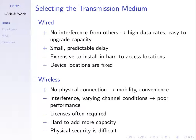Wired links are expensive to install in hard-to-access locations. For example, if SIT wants to upgrade capacity between our two campuses, we'd need to dig holes over the 16 or so kilometres between them — very expensive. And inside your home, if it's already built, running new cables along floors or inside walls can be difficult and costly.